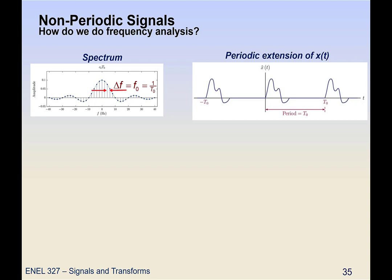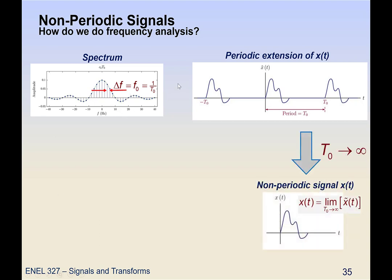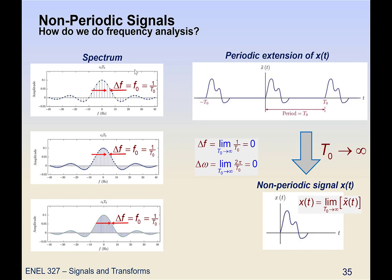With this periodic extension we have a spectrum that looks like this. Now we want to take the limit as the period T₀ goes to infinity, which effectively recaptures our original non-periodic signal. As T₀ goes to infinity, the frequency spacing 1/T₀ gets smaller and smaller — in the limit the frequency spacing goes to zero. As the period gets larger, the spectrum has the same shape but we get more coefficients filling it out, and eventually the spacing becomes zero. So we go from a discrete spectrum, and in the limit it becomes a continuous spectrum.